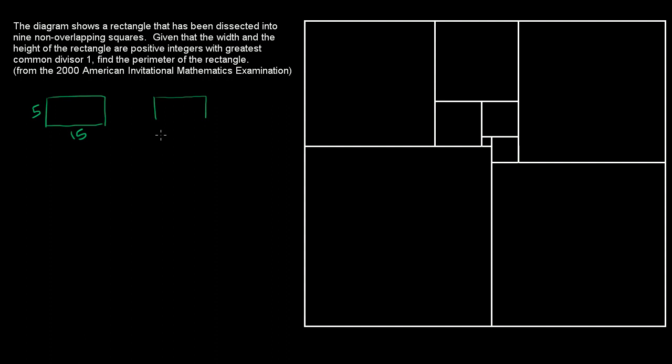So that's why they're saying greatest common divisor 1. And then they say, find the perimeter of the rectangle. So let's see what we can do here. I encourage you to pause it and try to do it on your own before I bumble my way through this problem.